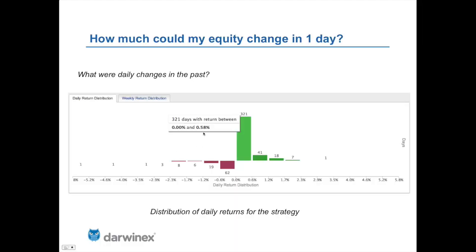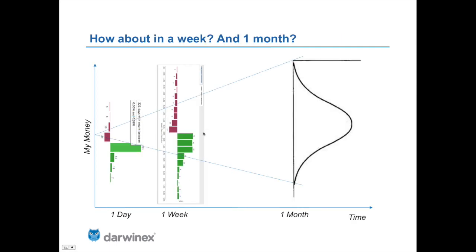Once we've done it for a day, we could say: how about in a week? Here we've rotated the view and we have the horizon of one day, then we could also do the same thing for a week, or we could even project the different returns until we reach the full horizon of one month.